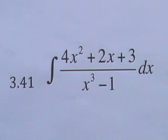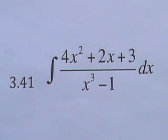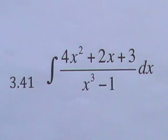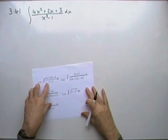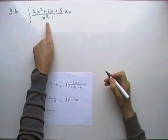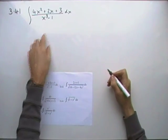Problem 3.41. This time it appears as if the quadratic is on top, but it's not, because the bottom is the difference of two cubes. That will factorise and then we can split it using partial fractions, and then the top can break up and leave just the quadratic underneath. So the first part: factorise the denominator — that's the difference of two cubes.